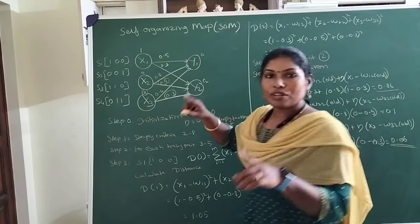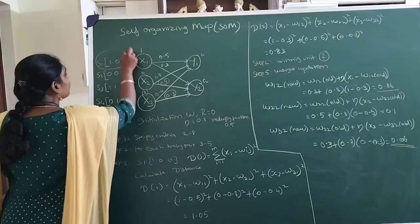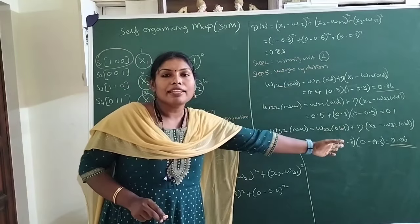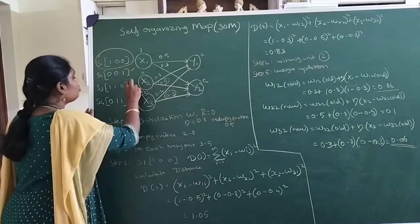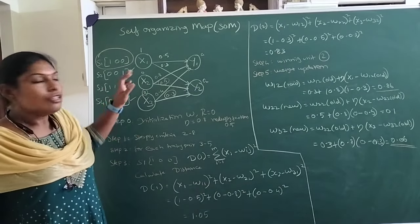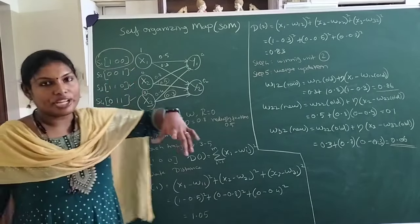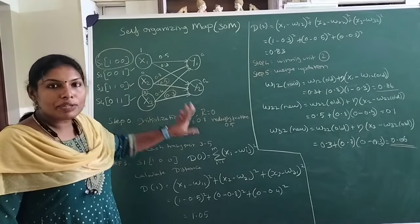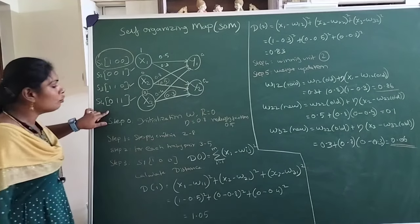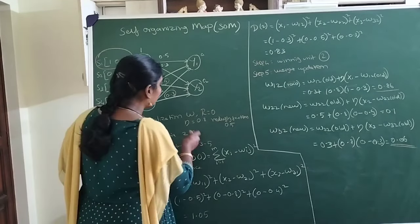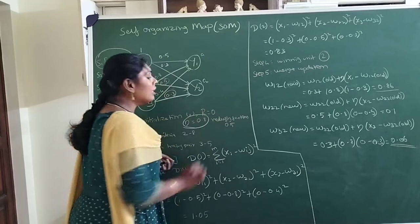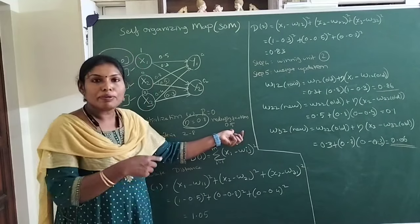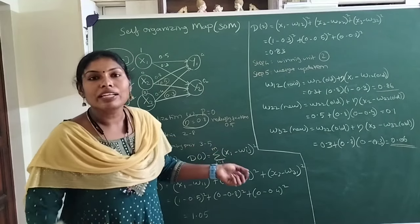This completes the processing of the first input pattern S1 — finding the Euclidean distance, choosing the winning vector, and updating the weights. The same must be repeated for S2, S3, and S4. One single iteration consists of training with all input patterns once. After completing all 4 patterns, we proceed with the learning rate update: the learning rate is 0.8 and each time we multiply it by 0.5 so the value gets reduced.